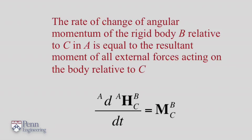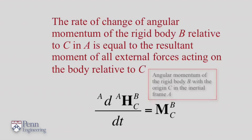So if you look at this equation, h is the angular momentum of the rigid body with the origin c, the center of mass, in the inertial frame a.